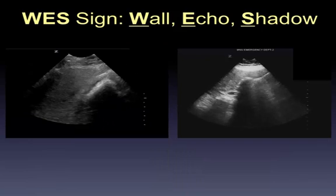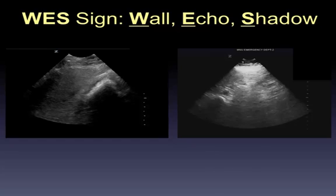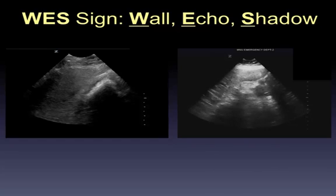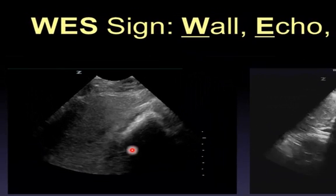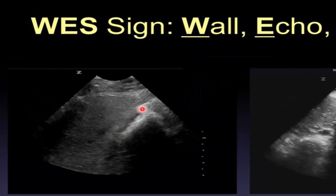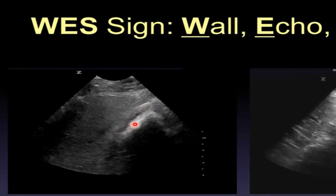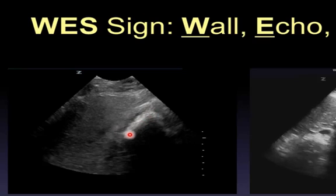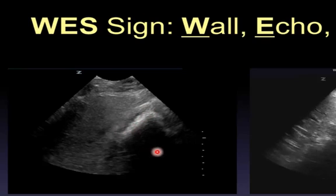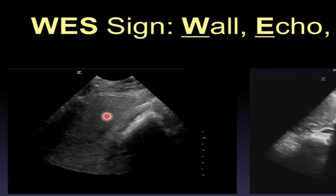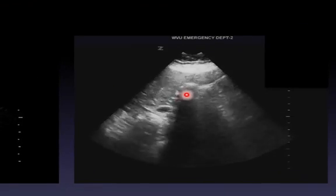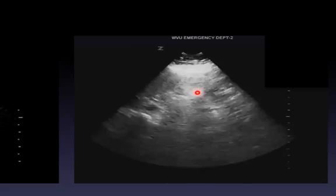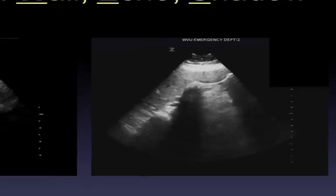Another sign to look for is the WES sign — wall-echo-shadow sign. Sometimes the gallbladder is so full of pathology that it's hard to even identify it as a gallbladder. What you see is roughly the outline of the wall, echogenic stones, and dark black shadows behind them. Using other landmarks — where you are in the liver, seeing the portal vein — helps you confirm you're indeed looking at a gallbladder that is full of stones.